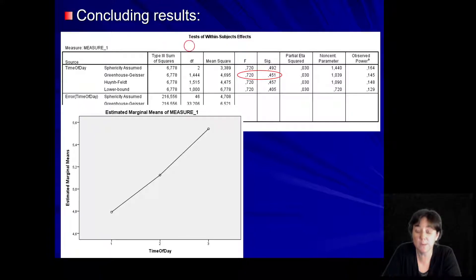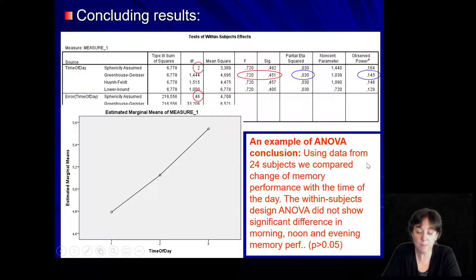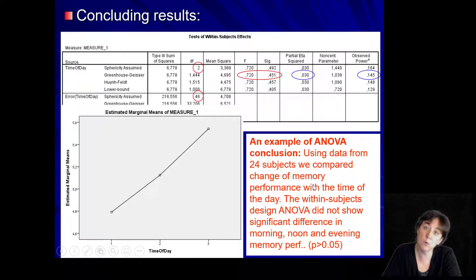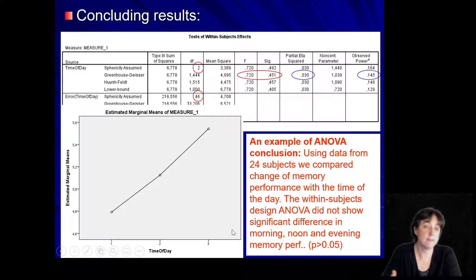The level of significance does not reach our threshold of 0.05, so we report no significant differences with regards to the time of the day. Degrees of freedom would be important, similarly to effect size and observed power, if we had a significant result. Based on the 24 subjects, comparing memory performance in the morning, noon, and evening using a within-subjects ANOVA, we couldn't find any significant differences. Thus, memory does not seem to vary with the time of the day.